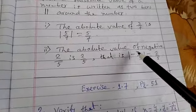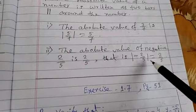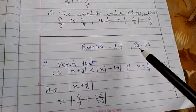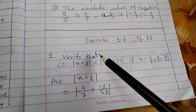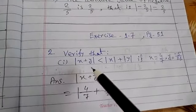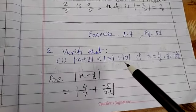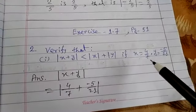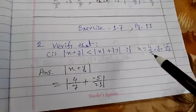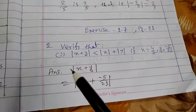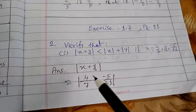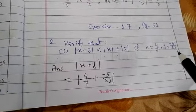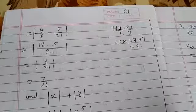Exercise 1.7, page number 51. Verify that |x + y| < |x| + |y| if x equals 4/7 and y equals -5/21. Answer: Now |x + y| equals, we put the value of x and y.